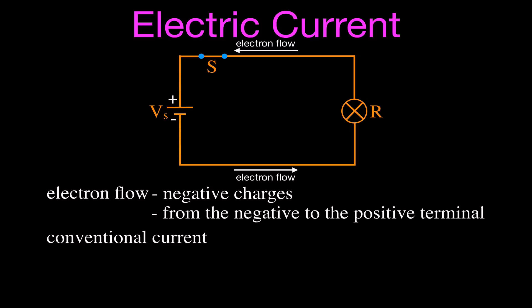About 200 years ago, when the conventions were being invented and the signs for charges — negative and positive — were established by Ben Franklin, they had no idea that there was such a thing as an electron. So they assumed that the current was actually made up of positive charges flowing through that wire. So now, in your textbook when it says 'current,' it refers to the flow of positive charges.